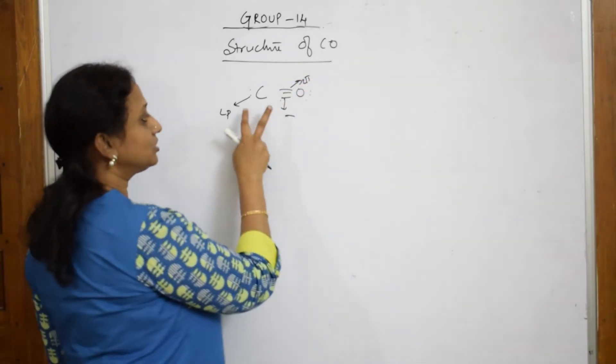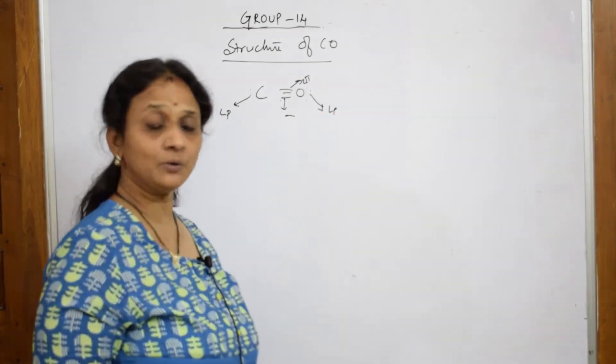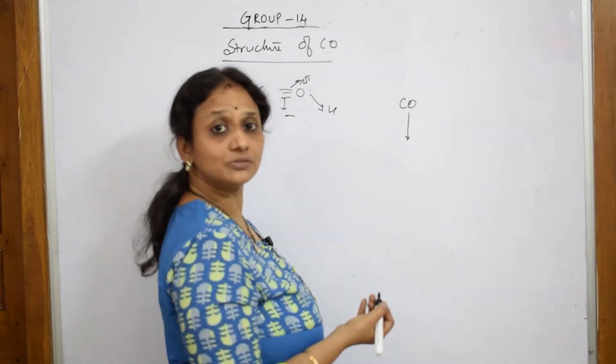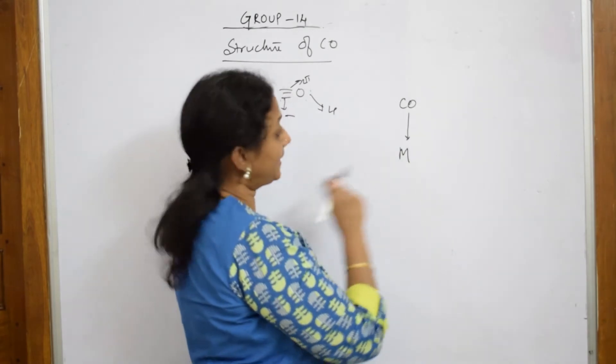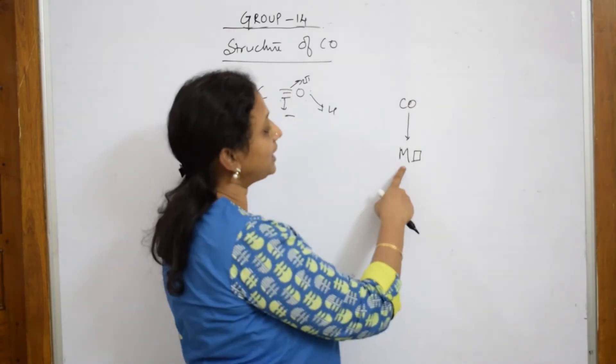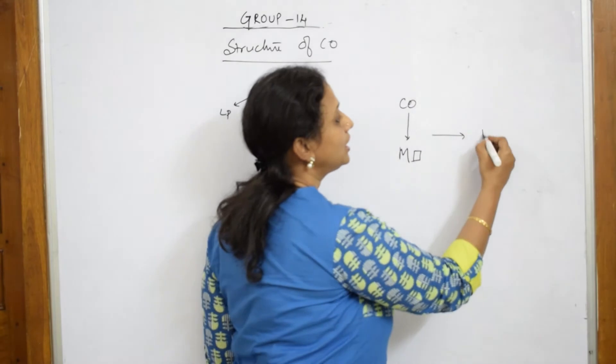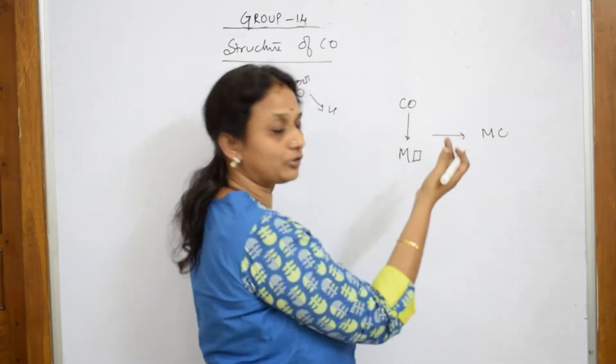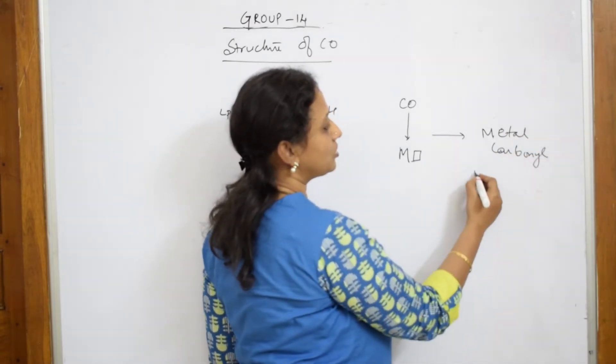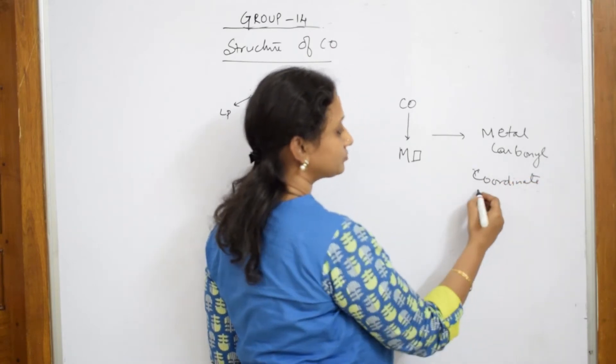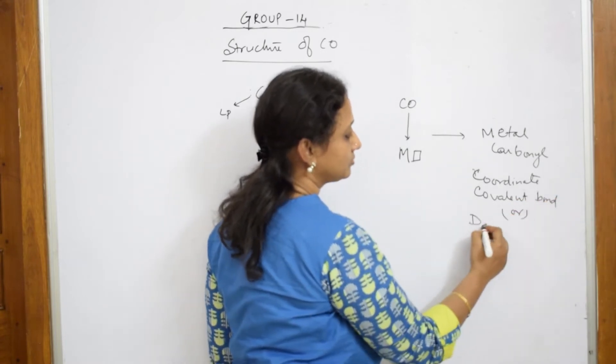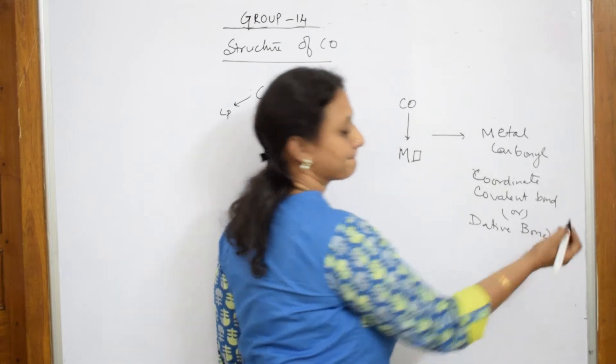Because of this lone pair of electrons on the carbonyl compound, this particular carbonyl compound starts donating its electrons to a metal atom. That metal atom has a vacant orbital present in it.